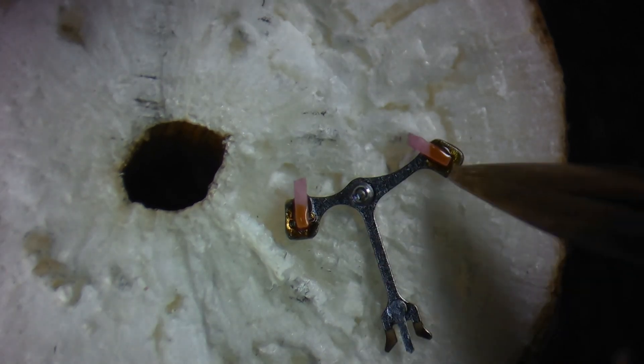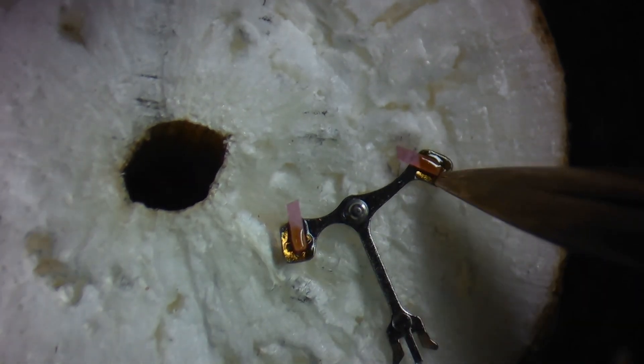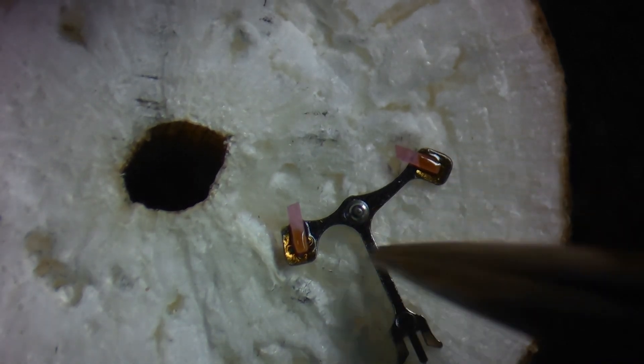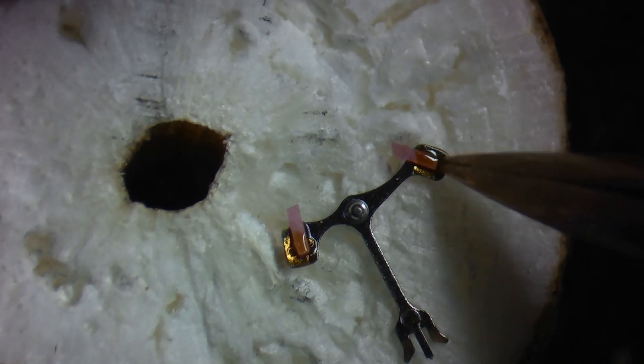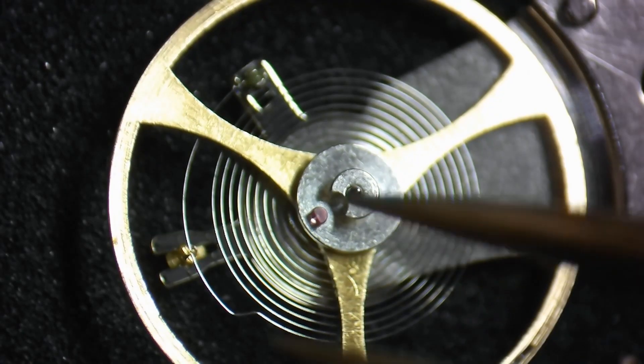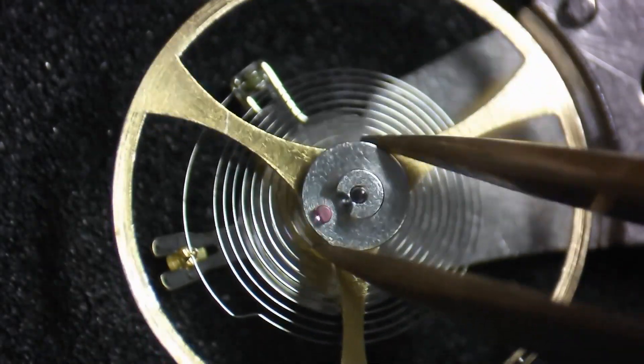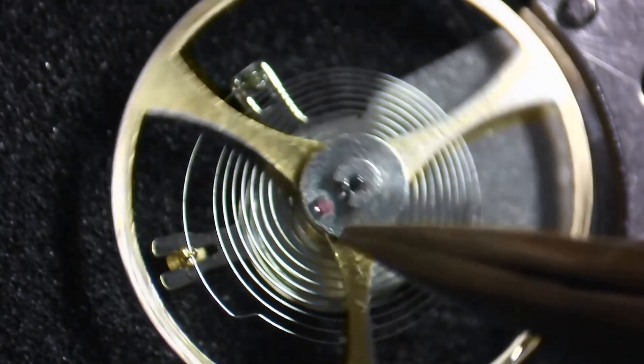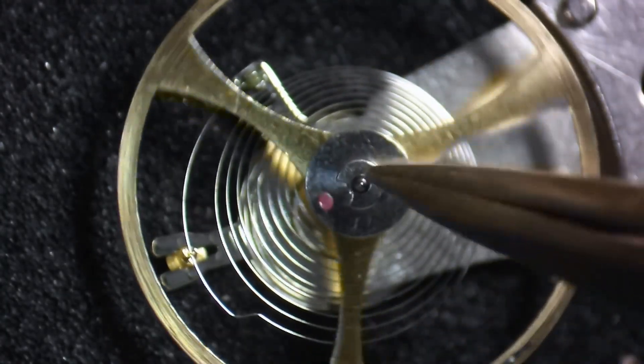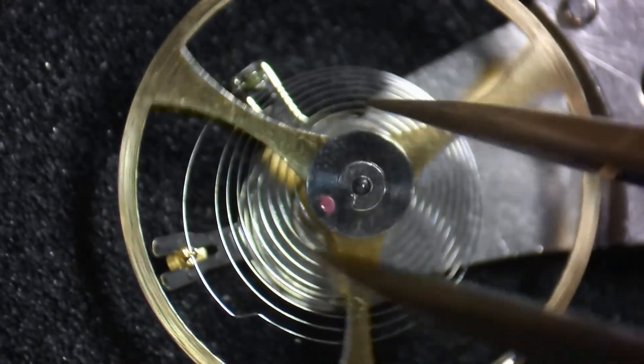Now, when we look at the pallet fork from the underside, you might notice that the jewels are held in with a material called shellac. Shellac is used as the adhesive to hold the jewels to the pallet fork because once this is warmed up, the shellac softens and the pallet jewels can actually be moved in and out to make adjustments in the escapement. Now, as we look at the underside of the balance wheel, this part is called the safety roller. And the safety roller holds the impulse jewel. This is the jewel that goes in and out of the slot on the pallet fork as the wheel rotates back and forth.